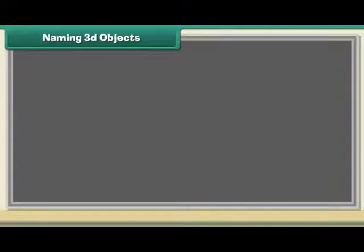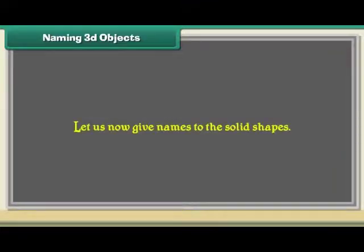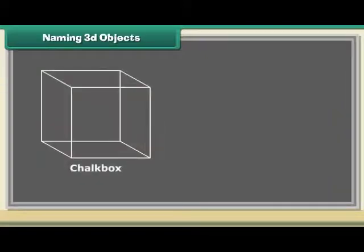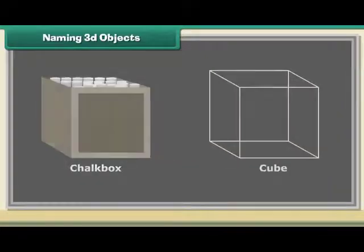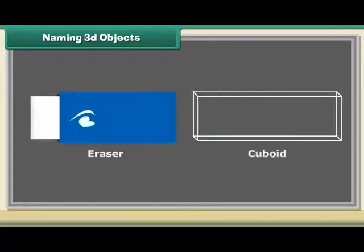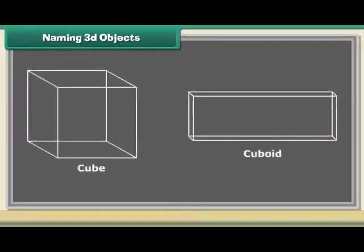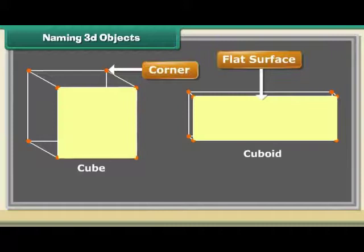Naming 3D objects. Let us now give names to the solid shapes. A chalk box is a cube. An eraser is a cuboid. Both cube and cuboid have corners and flat surfaces.